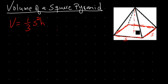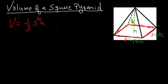The height is the actual height from the tip down to the center, measured perpendicularly — straight down. Let me mark that in green. So let's say the side measures 10 inches, and since it's a square base both sides are the same, 10 inches. And let's say the height measures 30 inches.